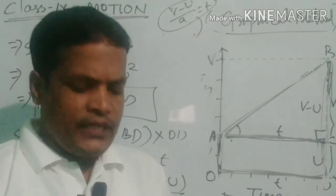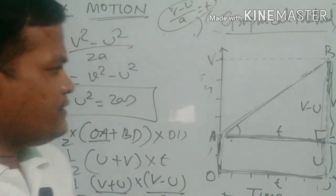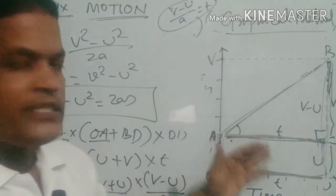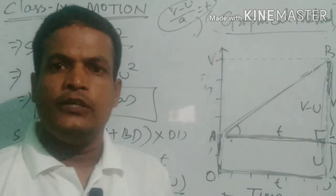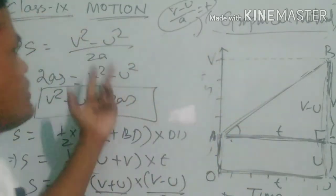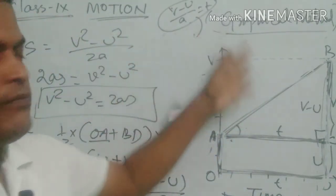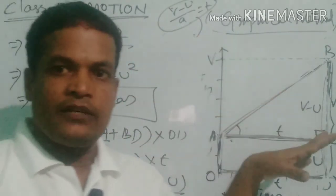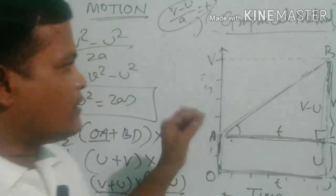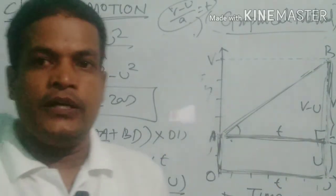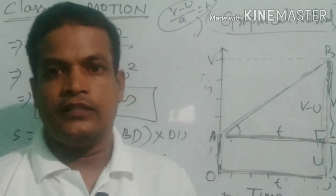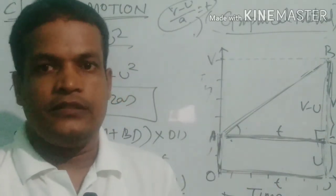By finding the acceleration using the slope and the distance covered by the body using the area, we can derive all three equations of motion by graphical method. This is all about today's class. In the next part of this video, we will discuss further.